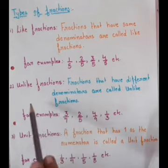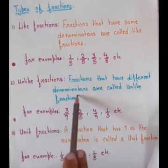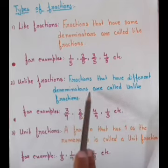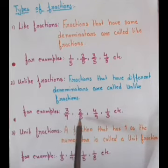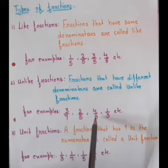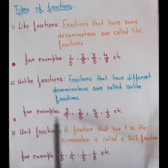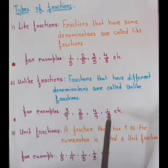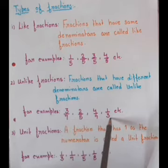Next is your unlike fractions. Fractions that have different denominators are called unlike fractions. So if fractions have different denominators, they are said to be unlike fractions. For example: three upon seven, two upon five, four upon nine, one upon three, etc. Here you can see each of them has a different denominator, so these fractions are said to be unlike fractions.